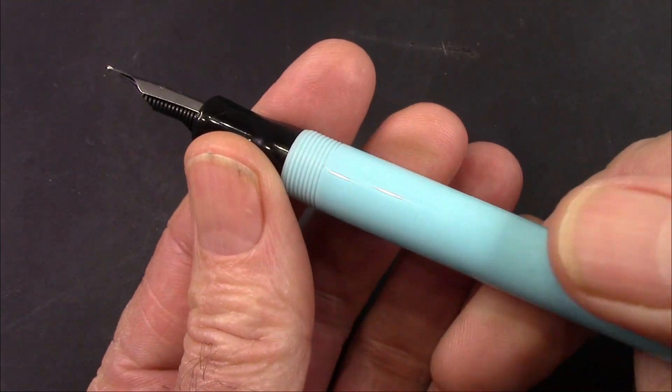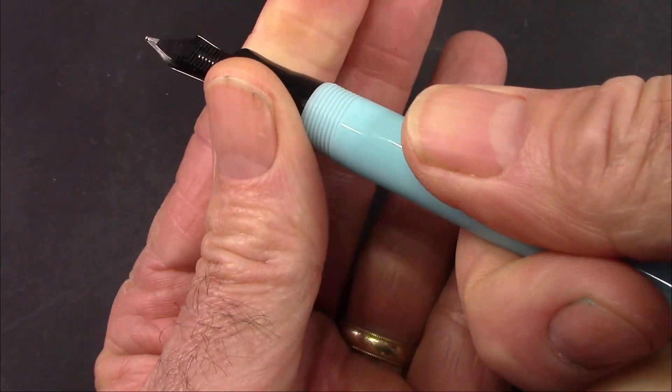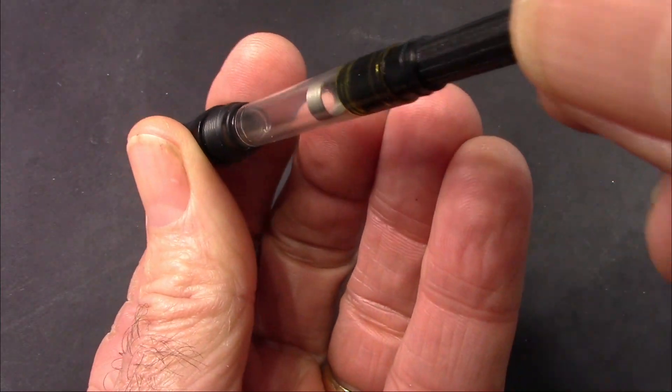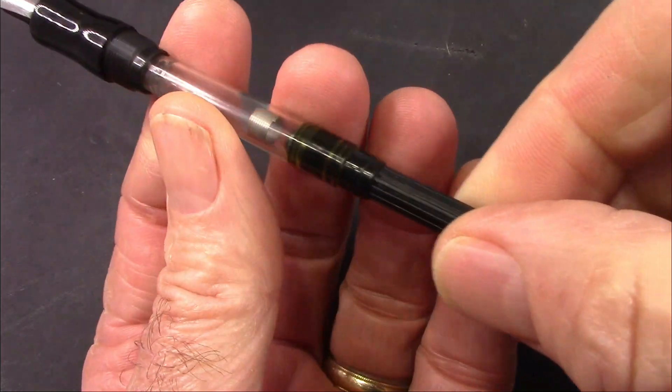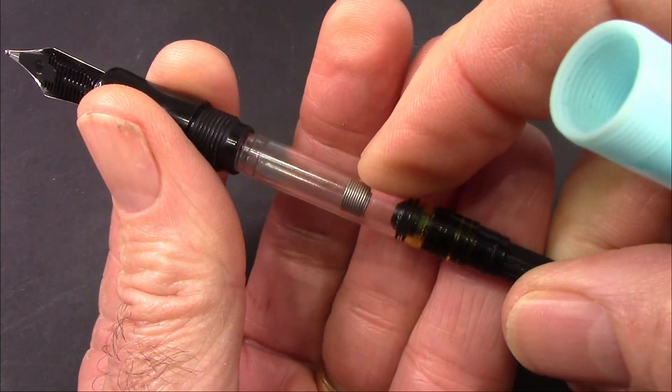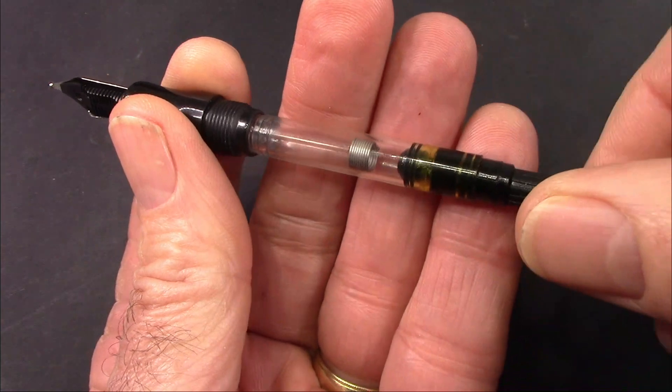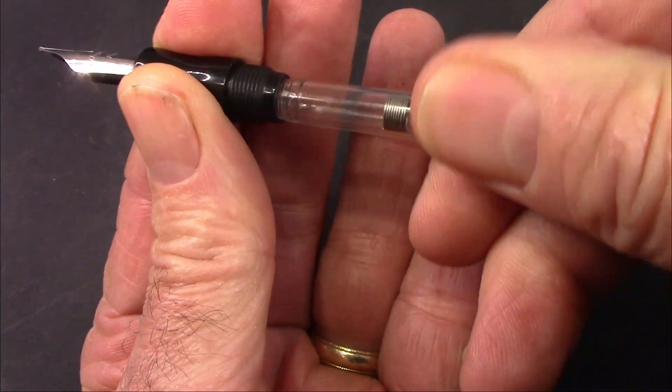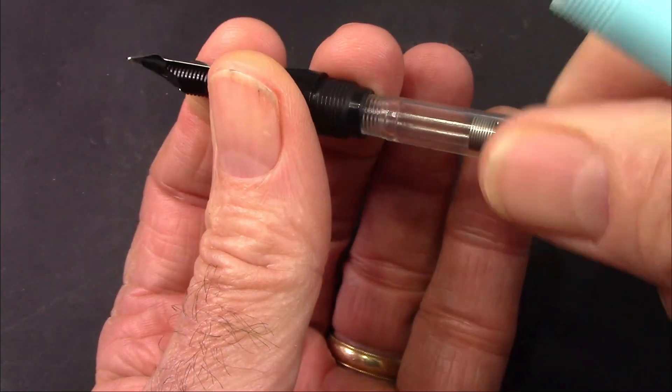As expected, this is a cartridge converter pen. Unscrew the barrel, and you'll see that classic Osprey converter. And as I've been told, the spring will no longer be used going forward, but the pens that I have and the converters that I have have a spring. It's a threaded converter.